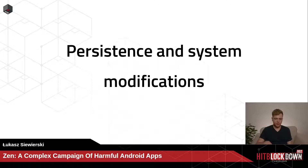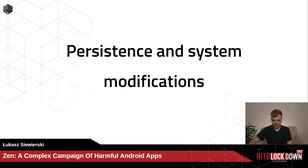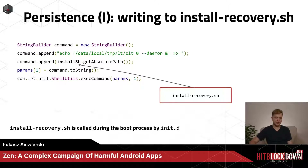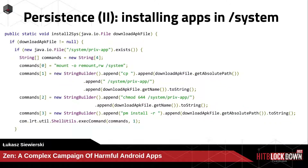Let's move on to persistence — how the malware survives on the system. The first method writes to installrecovery.sh, a script called during the boot process by init.d. The malware adds a line to execute the ZLT daemon, ensuring the app runs during boot. The second method is installing apps in /system. Installing in /system makes it harder for the user to disable the app.